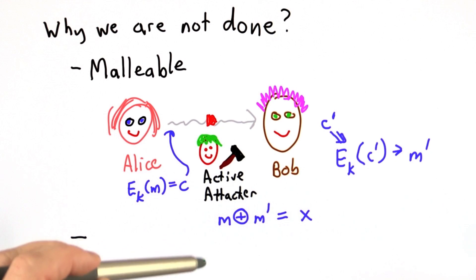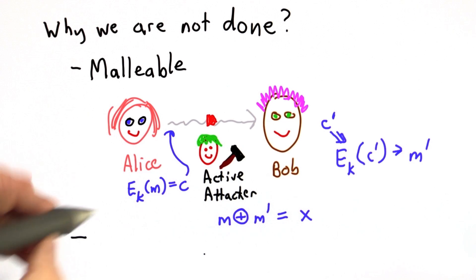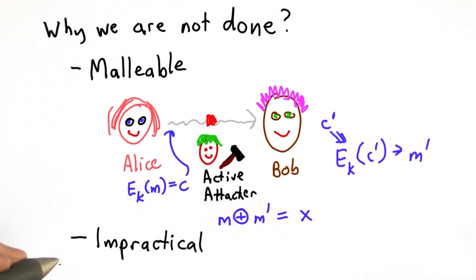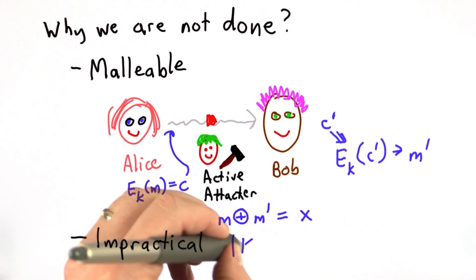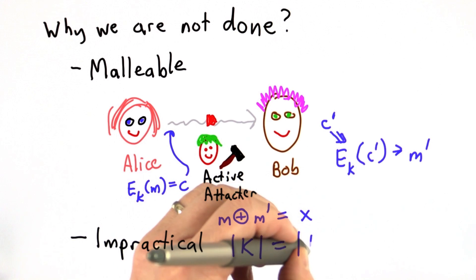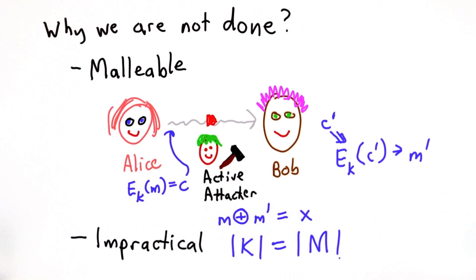Another big problem with the one-time pad is that it's very impractical. And the real reason that it's impractical is because the keys have to be as long as the message is, and we can never reuse the key. So this is this property that the number of possible keys is equal to the number of possible messages.